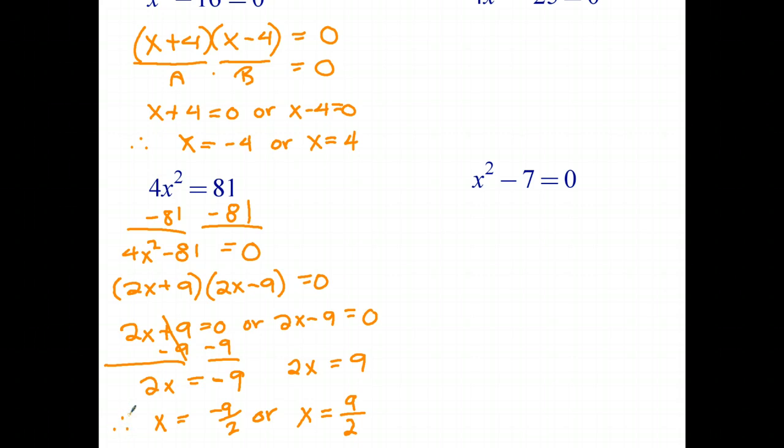Okay now one thing that's probably worth noting: notice how in the first equation I ended up with x equals negative 4 or x equals positive 4. So the same value but a different sign. And down here I've ended up with x equals negative 9 halves or x equals positive 9 halves. So the same thing, the only difference between the two solutions is one is positive and one is negative. And that's going to be a feature of DOTS, basically when you're solving equations using difference of two squares.